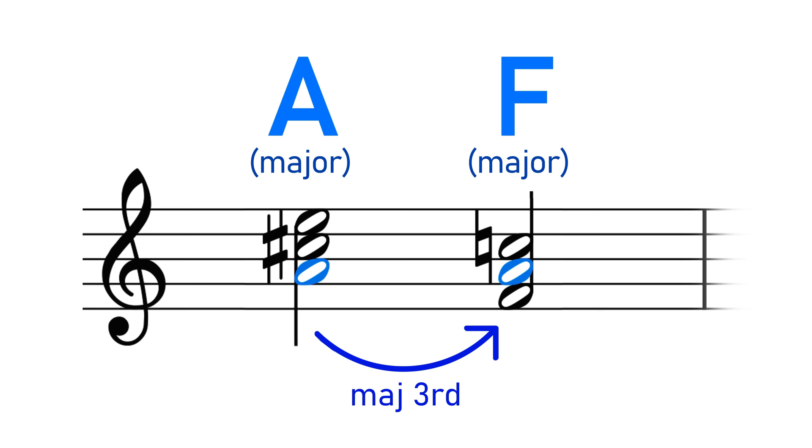So that's what we're getting here, right? We've got this A major chord moving to an F major chord, so that's two major chords a major third away from each other, chromatic mediants.